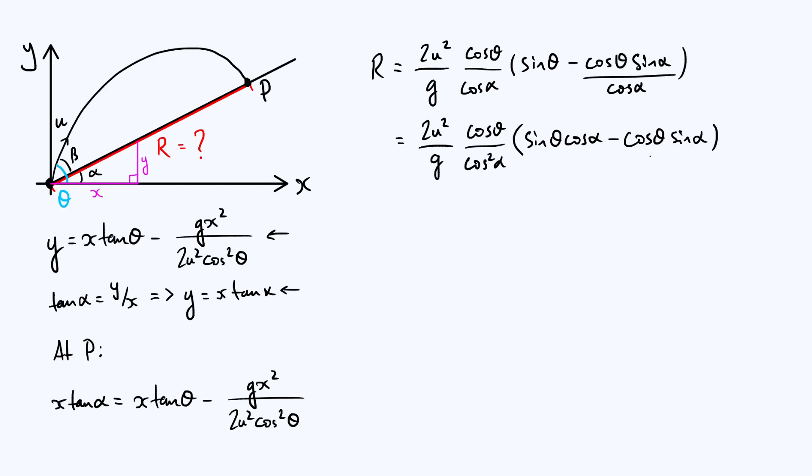So we can write that as sine theta cos alpha, and then the second term, because we've factored out the denominator, is just cos theta sine alpha. Now if you're familiar with your trig identities, you'll recognize sine theta cos alpha minus cos theta sine alpha as just the expansion of sine of theta minus alpha. And if we apply that identity, we can rewrite this as one nice big fraction: 2u squared cos theta and then just sine of theta minus alpha, and all of that over g cos squared alpha.